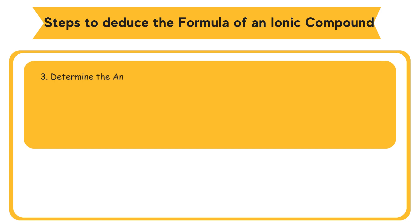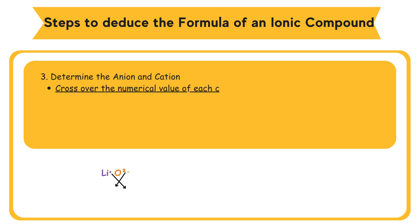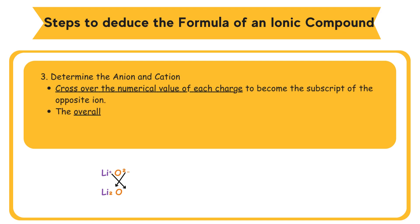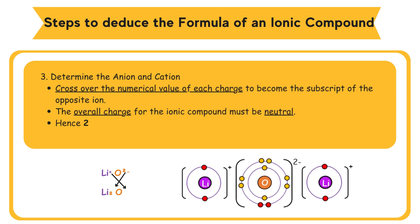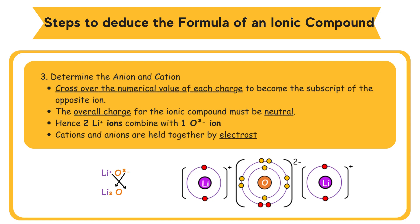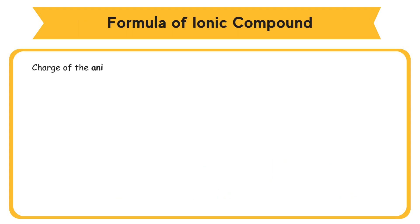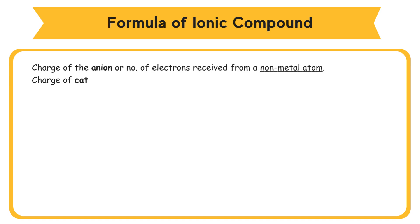Determine the ratio of cations to anions. Cross over the numerical value of each charge to become the subscript of the opposite ion, taking the simplest whole number. The overall charge of the ionic compound must be neutral. Hence, two Li⁺ cations combine with one O²⁻ anion. Cations and anions are held together by electrostatic forces. Formula of ionic compound: the charge of the anion equals the number of electrons received from a non-metal atom, and the charge of the cation equals the number of electrons donated by the metal atom.